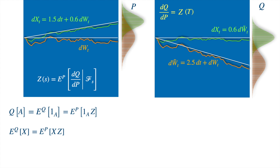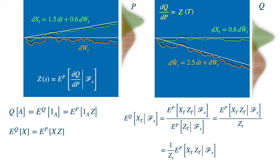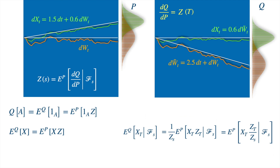And to link the conditional expectation under Q to the one under measure P, we can make use of Bayes' theorem. This is just a more general version of Bayes' theorem one sees in elementary probability books, and the denominator would just equal Z_s. We can also write Z_s separately to make it more readable, and we can also take Z_s inside the expectation because it is like a known quantity conditional on the information we have at time s. So essentially we are splitting the Radon-Nikodym derivative into the known and unknown parts — quite intuitive.